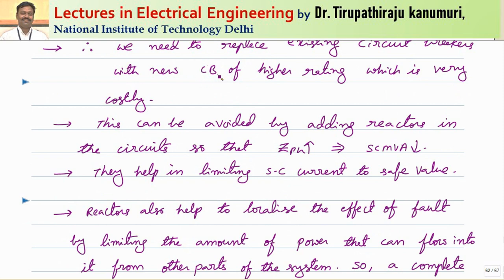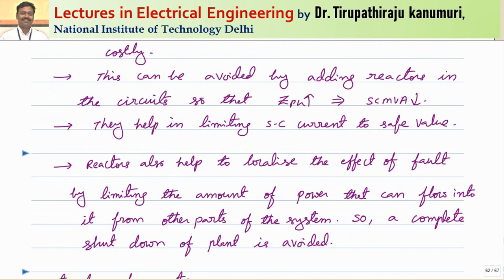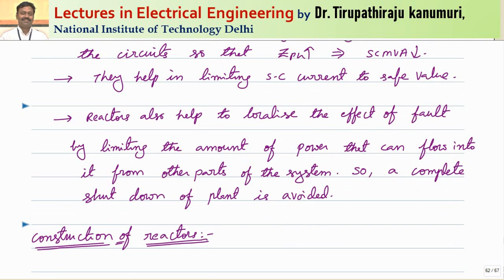The goal is to continue using existing circuit breakers even when new generators are connected to the system. The solution is to increase the denominator — that is, by increasing Z per unit — so that short circuit MVA can be maintained constant. Even though the system's full load MVA increases, if Z per unit is increased, the short circuit MVA will remain within the limit and we need not replace the circuit breakers. To increase Z per unit, reactors are inserted in series with the system.